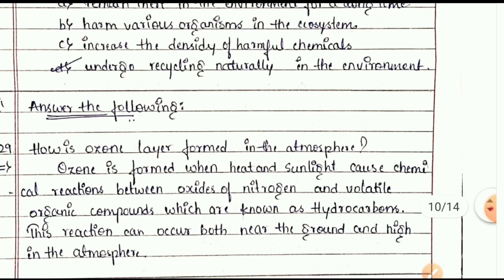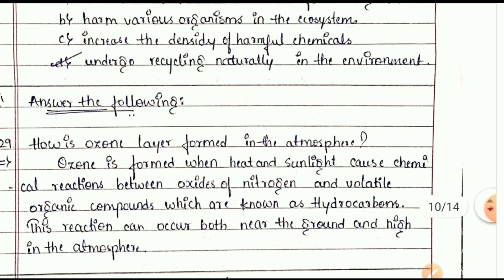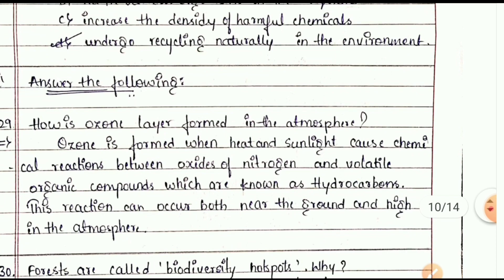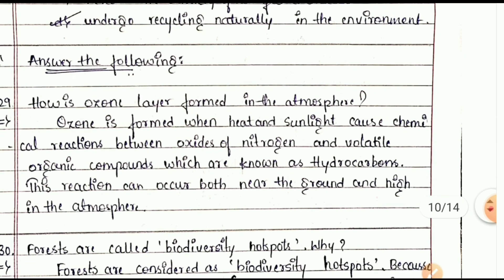Questions 29 to 31 are one-mark questions. How is the ozone layer formed in the atmosphere? Ozone is formed when heat and sunlight cause chemical reactions between oxides of nitrogen and volatile organic compounds known as hydrocarbons. These reactions can occur both near the ground and high in the atmosphere.